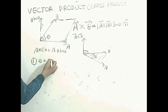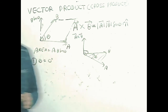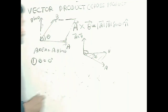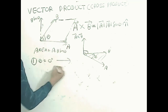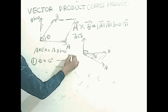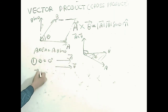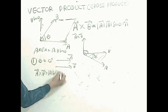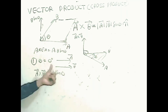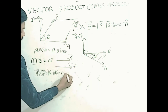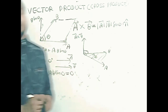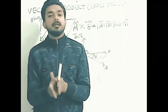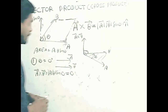Case 1 for cross product: when theta equals zero, meaning the two vectors are parallel to each other. Then A cross B equals |A| |B| sin 0, and since sin 0 equals zero, the cross product is zero. So when two vectors are perpendicular their dot product is zero, and when two vectors are parallel their cross product is zero.